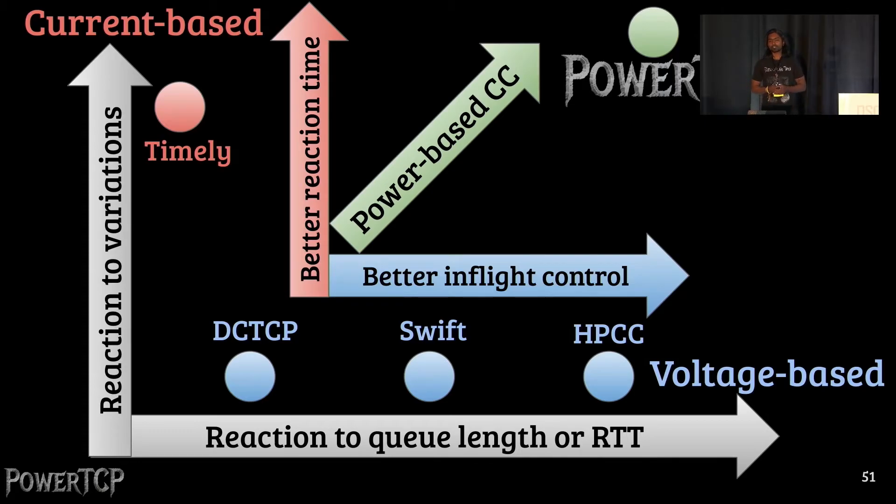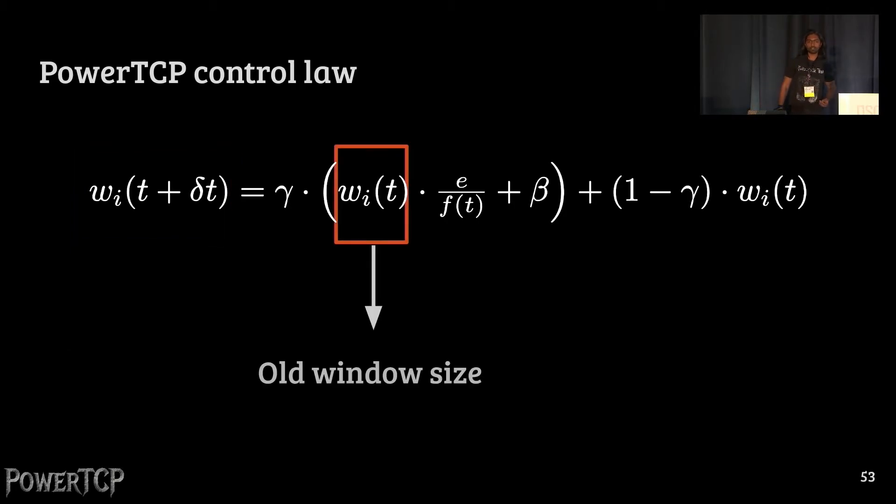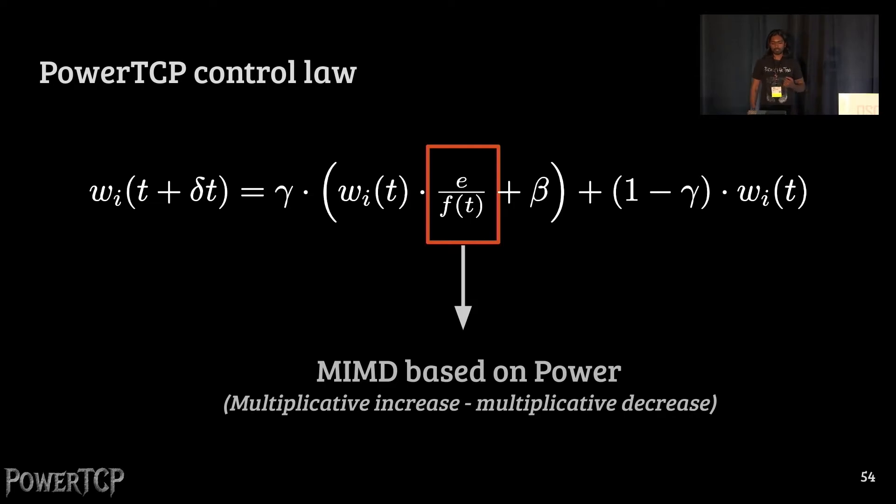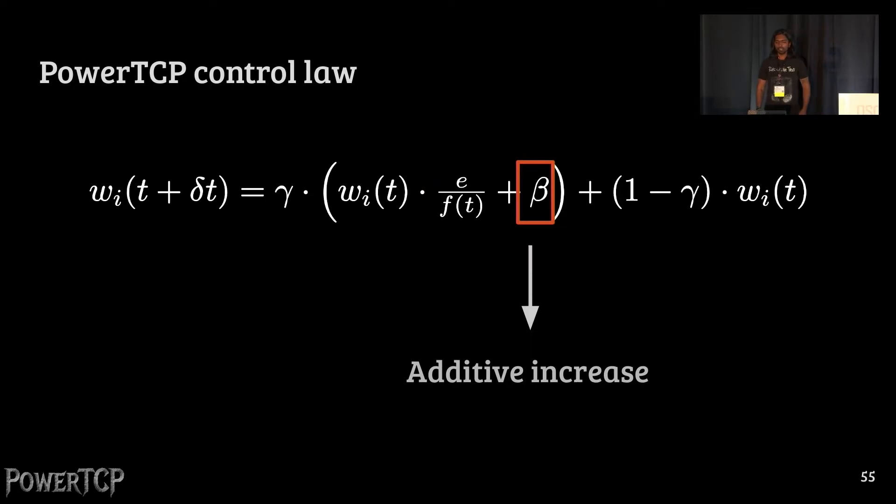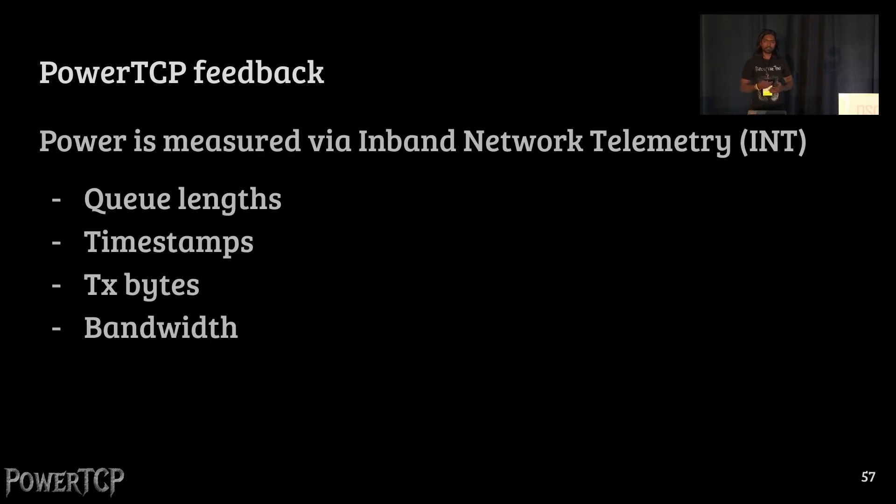At this point, the control law is indeed straightforward. The new window sizes are updated based on the old window size, which is a multiplicative increase, multiplicative decrease based on power, along with an additive increase. And the whole control law is an exponential weighted moving average over the past window sizes. We measure power using in-network telemetry, where switches append certain metadata into the packets. Receiver then echoes it back to the sender, and sender can then calculate power. This is standard in the literature. More details can be found in our paper as well.